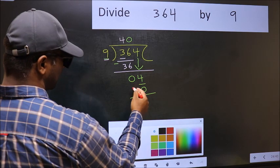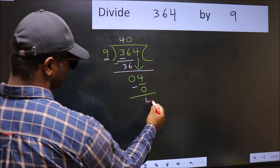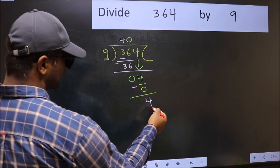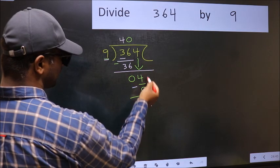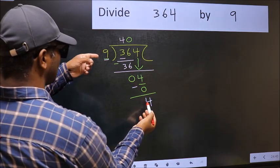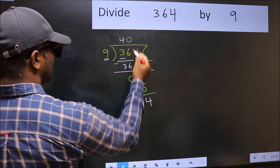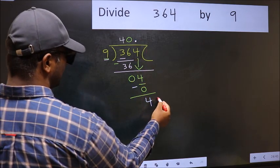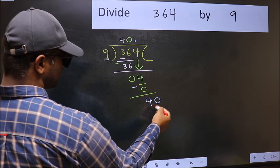Now you should subtract. 4 minus 0, 4. Over here, we did not bring any number down now. And 4 is smaller than 9. So now you can put dot and take 0. So 40.